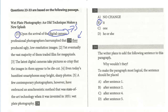Question 24: the writer plans to add the following sentence to the paragraph — 'Why wouldn't they?' To make the paragraph most logical, where should it be placed? If you're placing this rhetorical question, you need some reference to 'they.' Starting from the beginning of the paragraph: upon the arrival of the camera, the photographers complained that it produced ugly low-resolution images. Would you put 'why wouldn't they?' after sentence one? It really doesn't reference 'they' — it doesn't make sense.